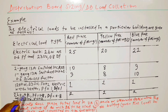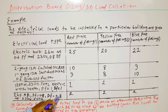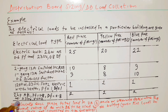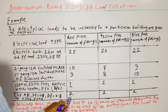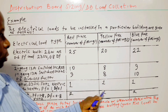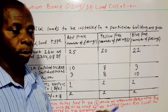2 horsepower air conditioner: power factor is equal to 0.8, diversity factor is also equal to 0.8, at 230 volts, 50 hertz. We have 2 on red phase, 2 on yellow phase, and 2 on blue phase.